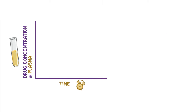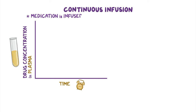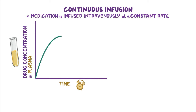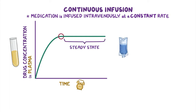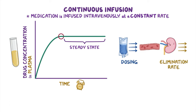Next, there's a regimen of continuous infusion, where a medication is infused intravenously at a constant rate. In this case, the plasma concentration progressively rises and reaches a peak, but instead of falling off, it continues at a plateau, also known as a steady state. This happens because as the concentration of the medication increases, so does the rate of elimination, until eventually the dosing and the elimination rate are equal.